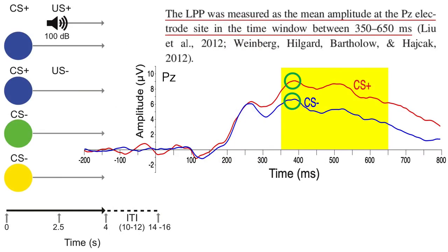It isn't necessarily a problem if a paper uses peaks — it's pretty common. But you should make sure that there's no reason to expect noisier data in one group or condition than in the other.